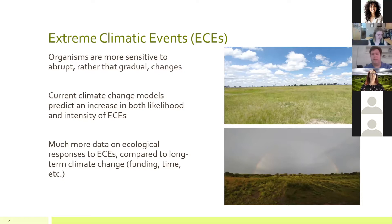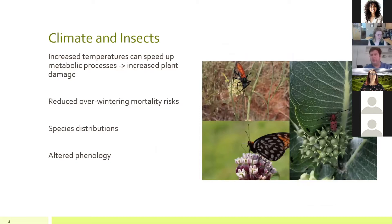I'll run through a few of the taxa and organisms impacted by climate change. Starting with insects, increased temperatures often speed up metabolic and physiological processes, which can have devastating impacts on plant communities. As insect metabolism speeds up, they consume more plant material, and this has been linked to pest outbreaks around the world.